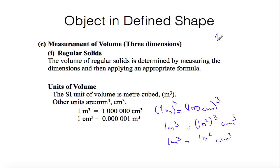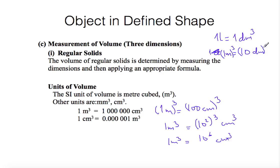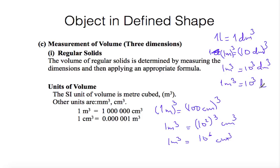Another important conversion: one liter means one decimeter cube. Since one meter equals 10 decimeters, if we cube both sides, one meter cube equals 10 to the 3 decimeter cube. So one decimeter cube is one liter, meaning one meter cube equals 10 to the 3 liters.